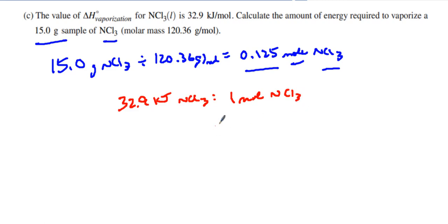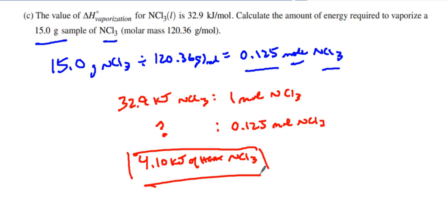Because later on do you see how it's 32.9 kilojoules of NCl3 for every one mole of NCl3. And we just have a simple ratio here, which means if I have 0.125 moles of NCl3, we can figure out this value of heat, the amount of heat required to vaporize it. And we can cross multiply, we can think about it like a proportion, and that gives us 4.10 kilojoules of heat to vaporize this many moles of NCl3. You can see I ran the three significant digits as well, 4.10.